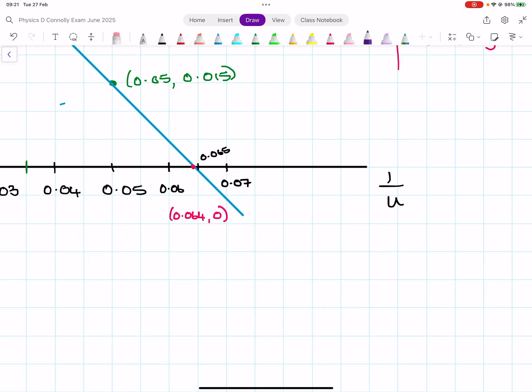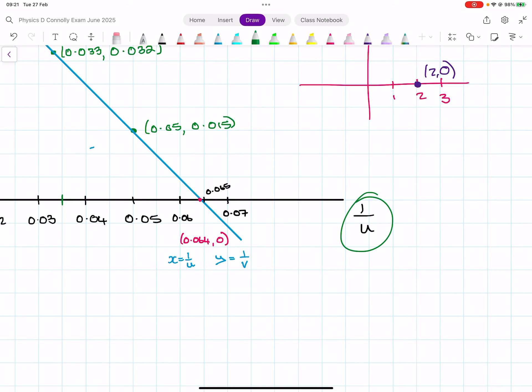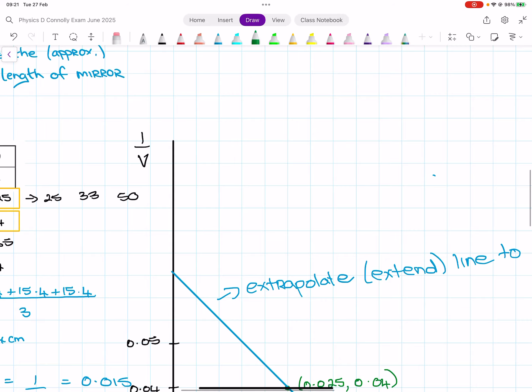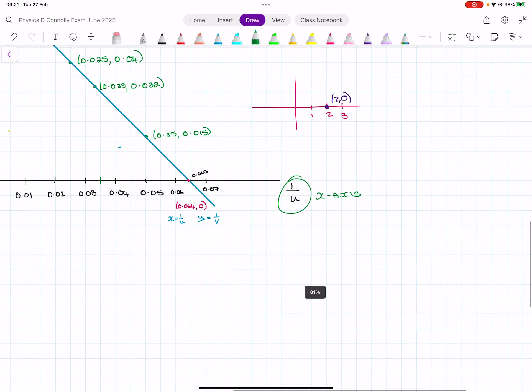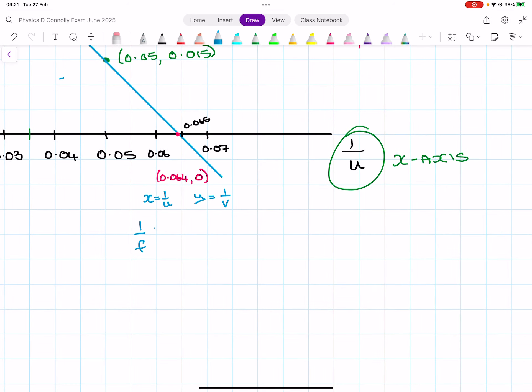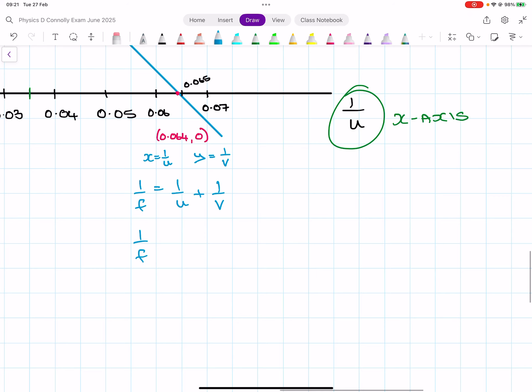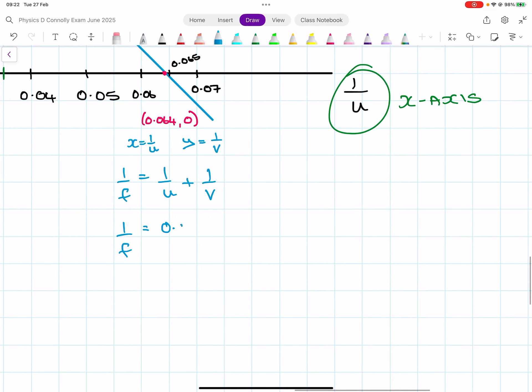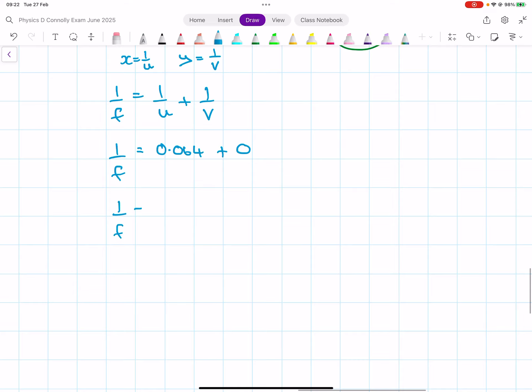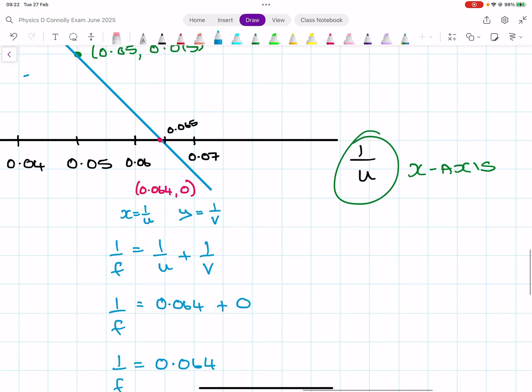But on this graph x is 1 over u and y is 1 over v, because literally that's what I have - here's the x-axis with 1 over u and y with 1 over v. So we get our formula: 1 over f equals 1 over u plus 1 over v. And for this point it becomes 1 over f equals 0.064 plus zero. So basically we have a value for 1 over f of 0.064.